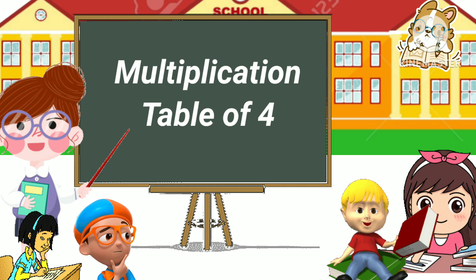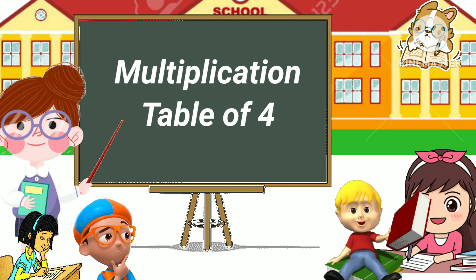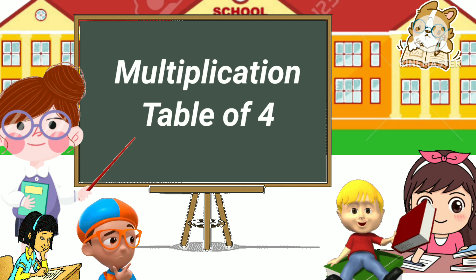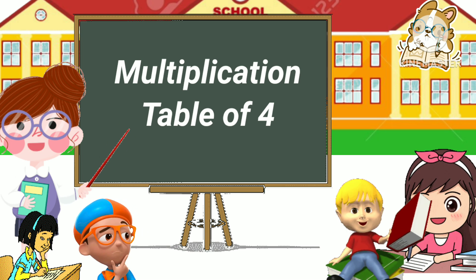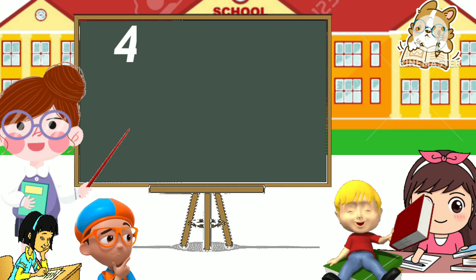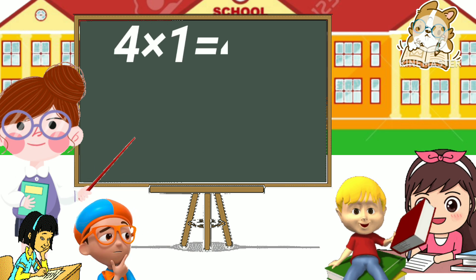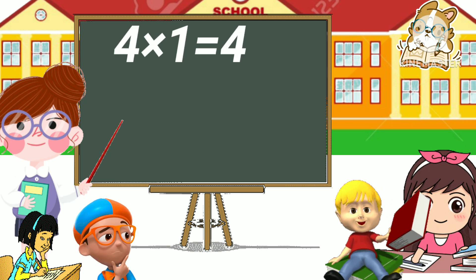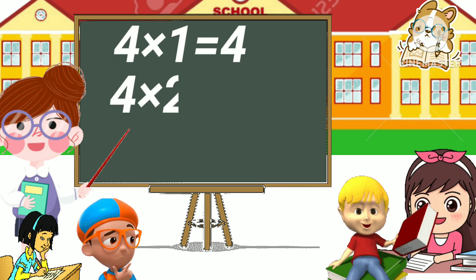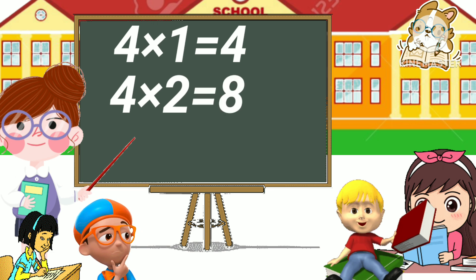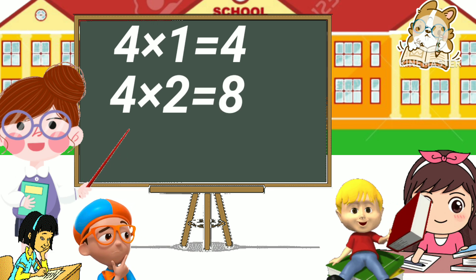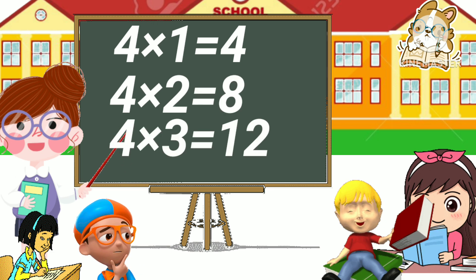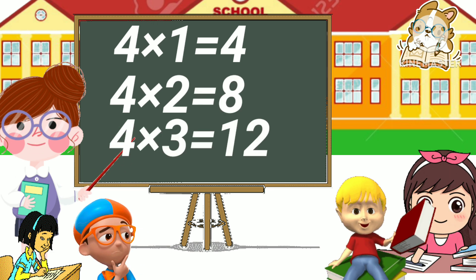Students, let's learn the multiplication table of four. Four one has four, four two has eight, four three has twelve.